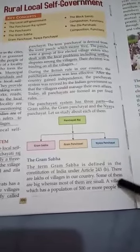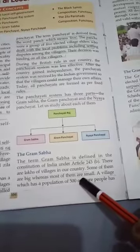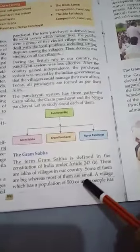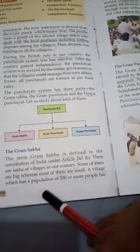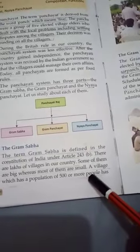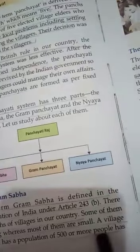The Gram Sabha is defined in the Constitution of India under Article 243b. There are lakhs of villages in our country — some big, some very small. A village which has a population of 500 or more people has a Gram Sabha. You have to remember this very important point: a Gram Sabha has a population of 500 or more people.